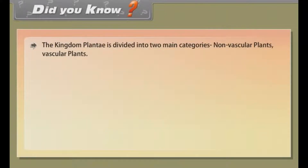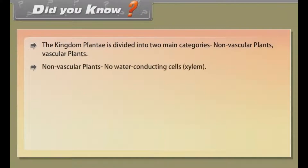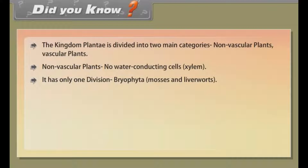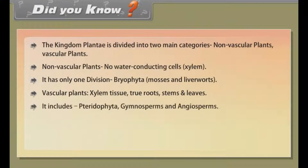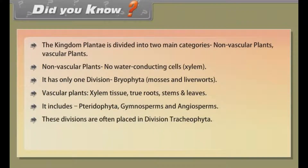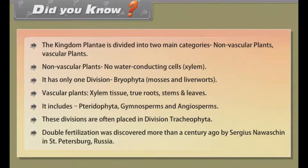Did you know? The kingdom Plantae is divided into two main categories: non-vascular plants and vascular plants. Non-vascular plants have no water-conducting cells (xylem) and include only one division — Bryophyta (mosses and liverworts). Vascular plants have xylem tissue, true roots, stems and leaves, and include Pteridophyta, Gymnosperms, and Angiosperms — these divisions are often placed in division Tracheophyta. Double fertilization was discovered more than a century ago by Sergius Navashchin in St. Petersburg, Russia.